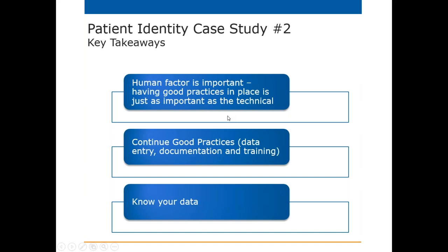Key takeaways from Case Study 2: The human factor is just as important as the technical side. Having well-trained staff who understand how to properly gather demographics and patient information is very important on the front end, and it helps on the back end both from a clinical and billing perspective. They said this was something they wanted to do every year — even though their system doesn't have the ability to show them this — just to know their data, confirm their processes are working correctly, and make sure nothing is breaking down.